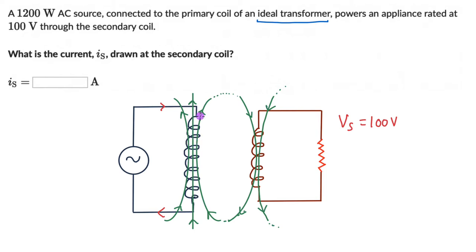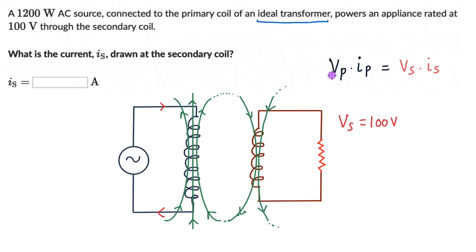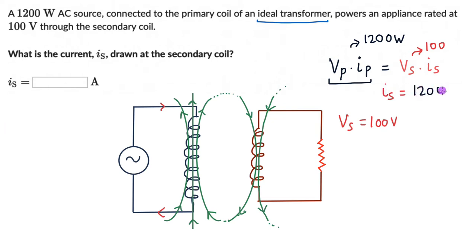From the law of conservation of energy, the power across both coils is the same. So the power across the primary coil, Vp × Ip, equals the power across the secondary coil, Vs × Is. We know Vp × Ip = 1200 watts, and the voltage across the appliance Vs = 100 volts. So Is = 1200 ÷ 100, which comes out to 12 amperes.